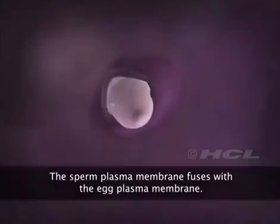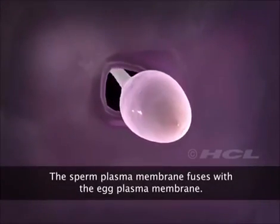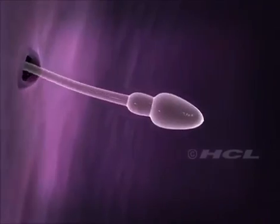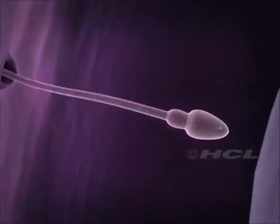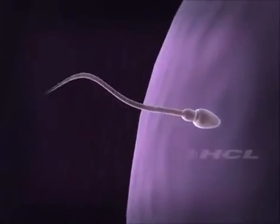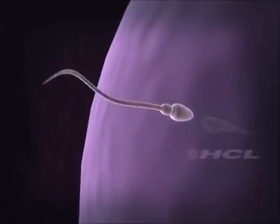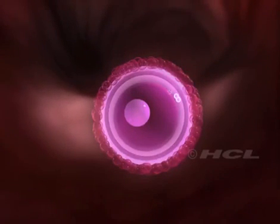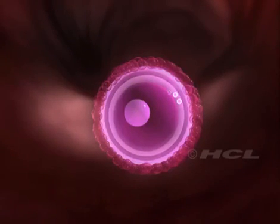The sperm plasma membrane then fuses with the egg plasma membrane. This fusion triggers the secondary oocyte to complete its second meiotic division. The second meiotic division is also unequal and leads to the formation of a second polar body and a haploid ovum.